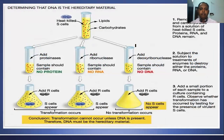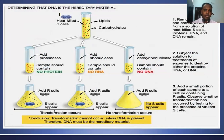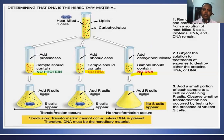The next experiment was the biochemical characterization of the transforming principle, given by three scientists: Oswald Avery, Colin MacLeod, and Maclyn McCarty. They took heat-killed S strain, isolated and purified the chemicals, separating lipids and carbohydrates, and kept only protein, DNA, and RNA in three different tubes. One tube was digested with proteinase, which digested all the protein leaving only DNA and RNA. Another was treated with ribonuclease, which cleaved and removed RNA, leaving protein and DNA. The third was treated with deoxyribonuclease, which cleaved DNA alone, leaving protein and RNA.